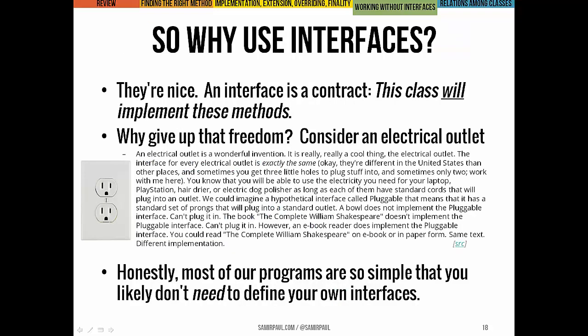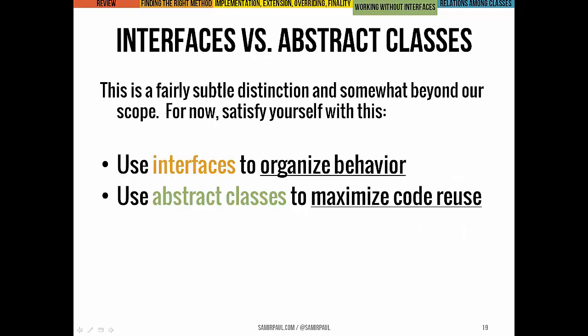So why should you use an interface? The short answer is they're nice. Interfaces are contracts — they give us confidence that the class we've written will be able to perform certain functions. For an intro programming class our programs are relatively short and simple, so this distinction is subtle. But the big idea for larger projects: interfaces organize behavior, and abstract classes maximize code reuse. Those are the two distinct specialties of these hierarchical inheritance structures.